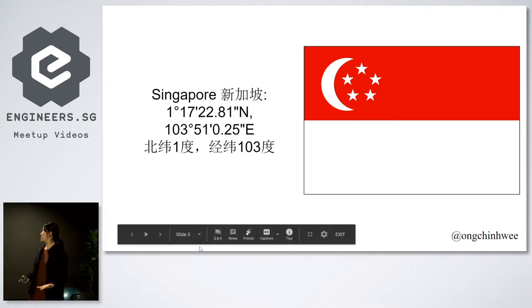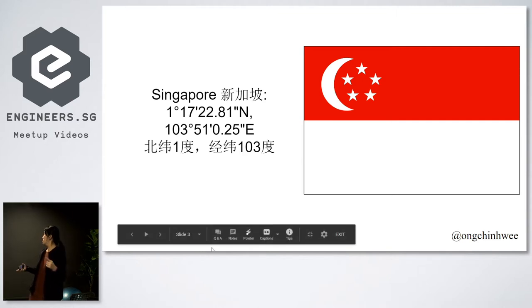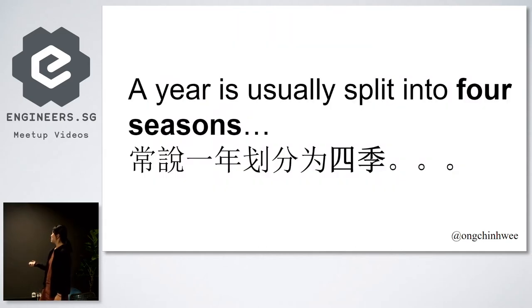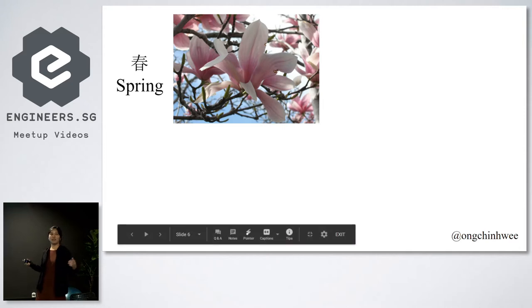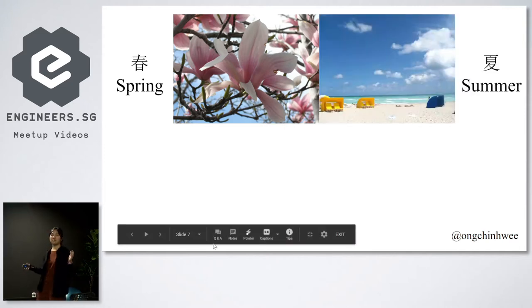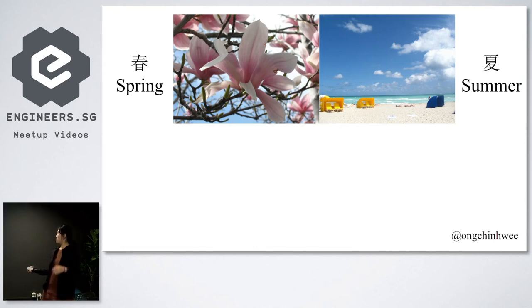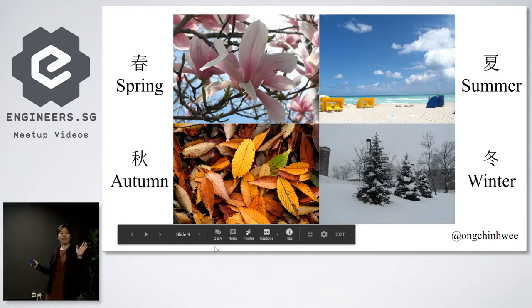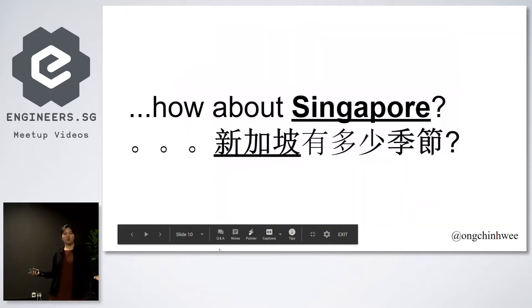Singapore — we all know the coordinates, it's about one degree above the equator. A year is usually split into four seasons: spring, with all those sakuras; summer, where people go to the beach and suntan; autumn, with very nice autumn leaves; and winter, which is cold but still fun. But what about Singapore? Do we have nice flowers, sakuras, maple leaves, or snow?